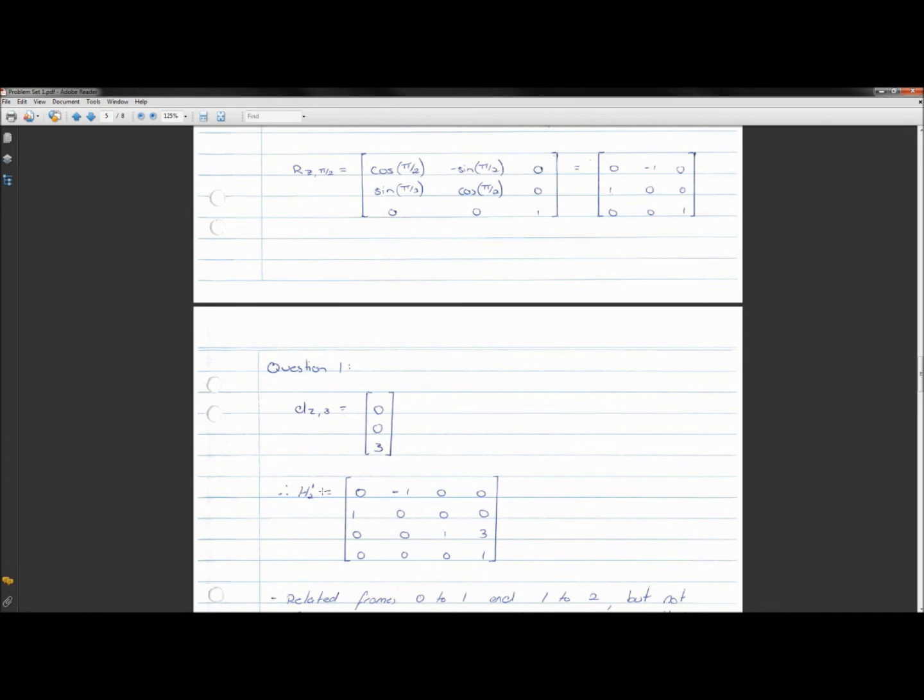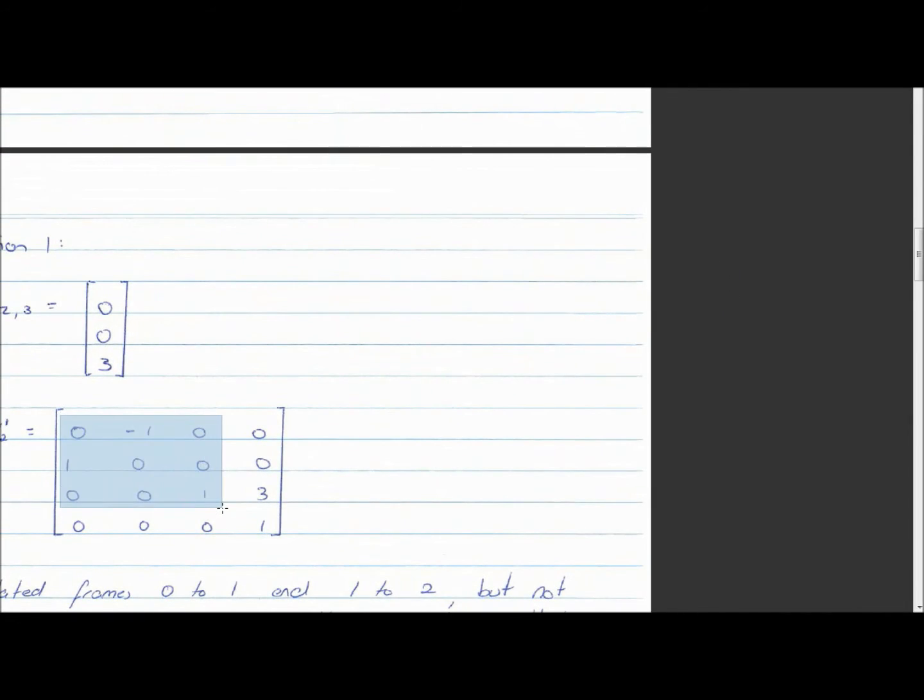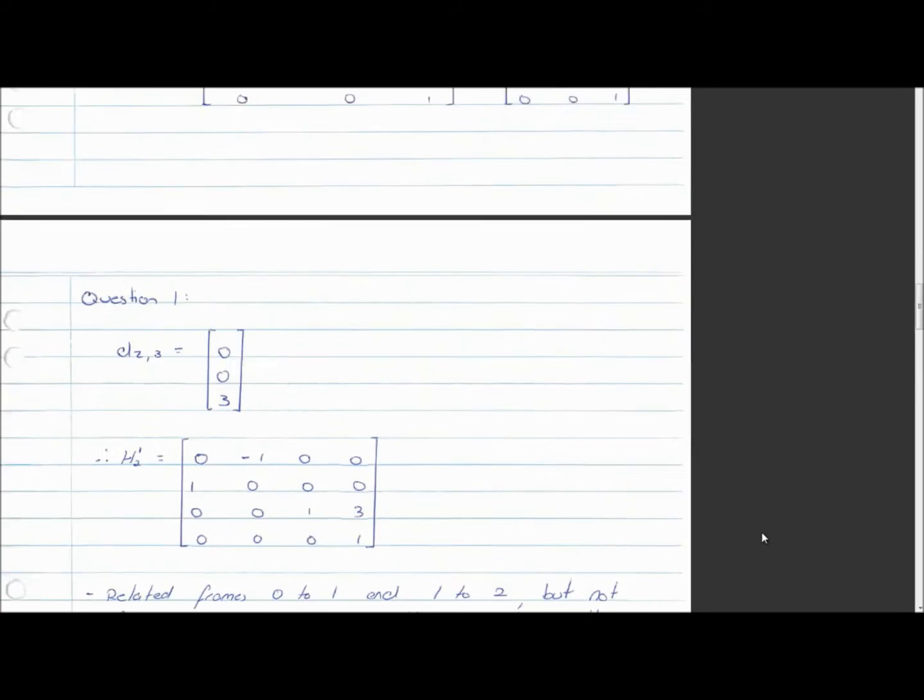So this relates reference frame 2 back into reference frame 1. And so again, you notice that the rotational part is here, the displacement part is here, and we have the 0, 0, 1 business down the bottom to make it a square matrix, so matrix multiplication works.